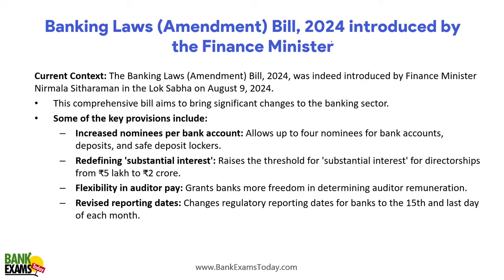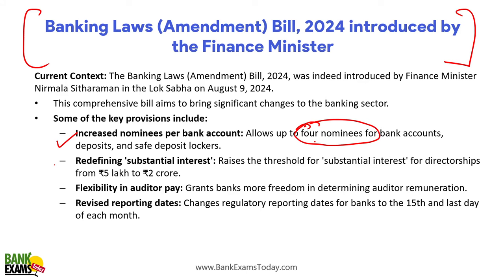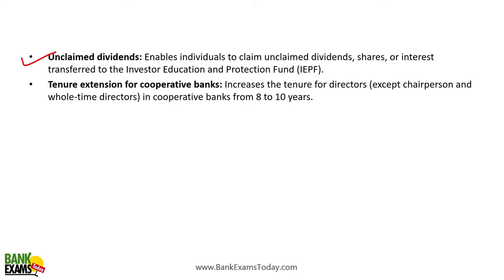The Banking Laws Amendment Bill 2024 was introduced by the Finance Minister. Key proposals include: allowing up to four nominees per bank account instead of one; raising the threshold for substantial interest for directorship from 5 lakhs to 2 crore; flexibility in auditor pay with no limit on the auditor's fee; revised regulatory reporting dates for banks to the 15th and last day of each month; enabling individuals to claim unclaimed dividends, shares or interest transferred to the Investor Education and Protection Fund; and increasing the tenure for directors of cooperative banks from eight years to ten years.